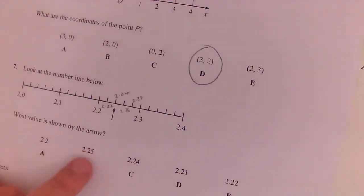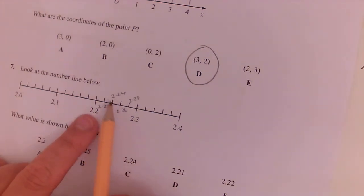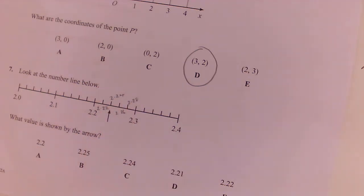And then the 2.3. So 2.22, 2.24, 2.26, 2.28, 2.30. So the one that's shown there is 2.24, which is C.